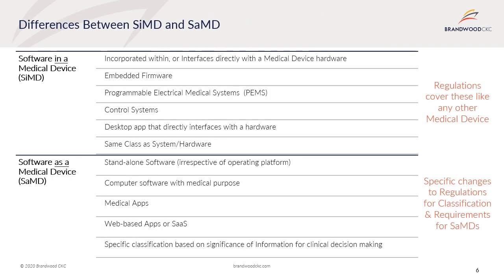Traditionally, medical device software was primarily referred to as software that was part of a host or parent device or hardware — that is, software in a medical device. With the rise of standalone software devices, a group known as software as a medical device has come about. Software in a medical device can be incorporated within or interface directly with medical device hardware. They can be embedded firmware, also known as programmable electrical medical systems referenced in IEC 60601-1 standard. They may be part of a control system or a desktop application that directly interfaces with a hardware device. They are usually the same class as the host or parent system, and are regulated like any other medical device, usually included within the host or parent device submissions.